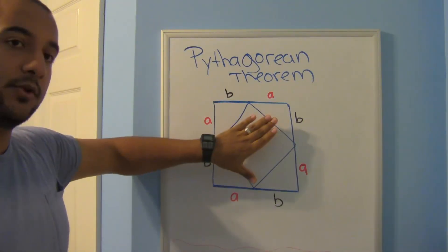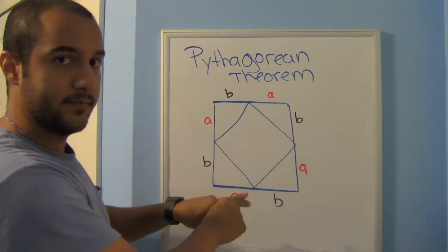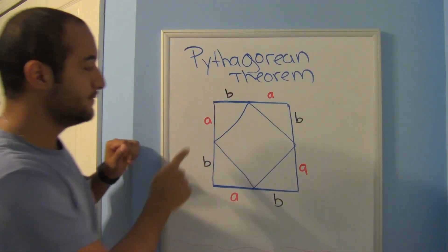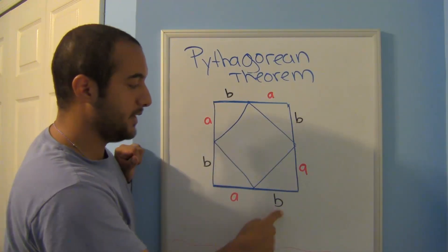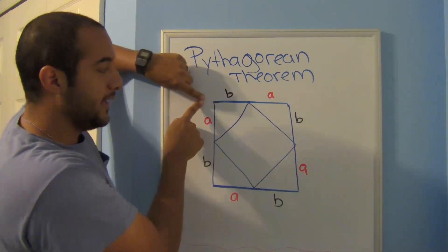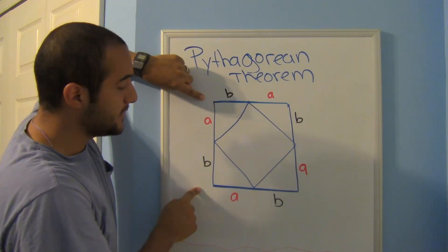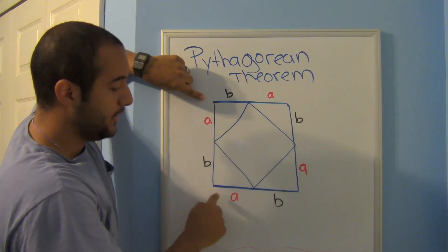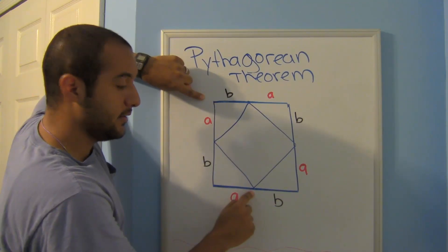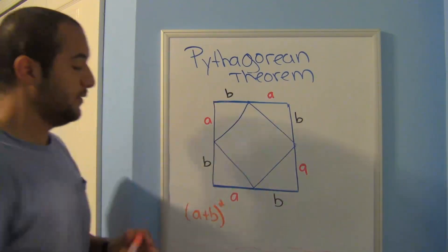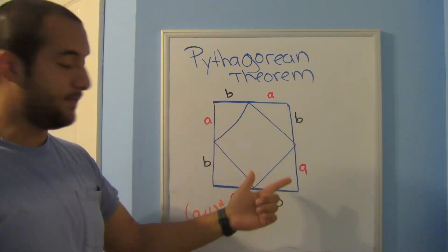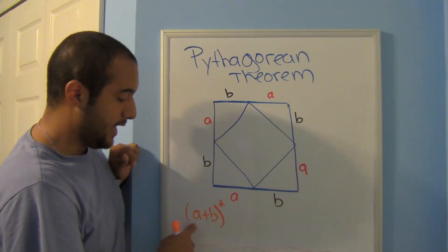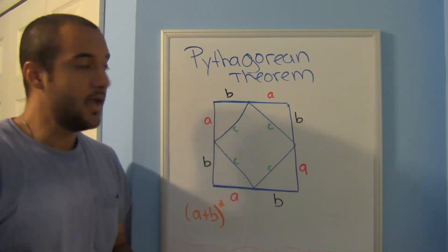We start off with a square. Don't look at the one inside just yet — look at the outside square. We have a, B, a, B, a, B, a, B, a, B. So the length of this side would be a up to here plus B — so A plus B — and likewise for the bottom: A plus B. To get the area of the big square, we say A plus B times A plus B, in other words A plus B squared.